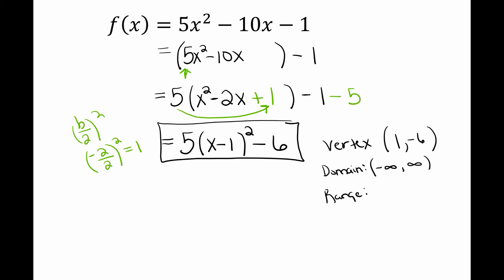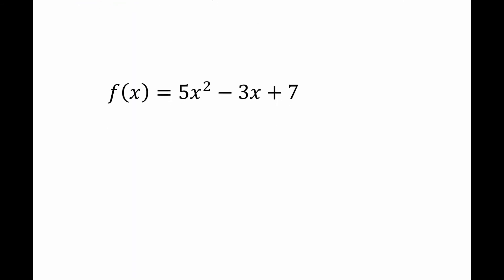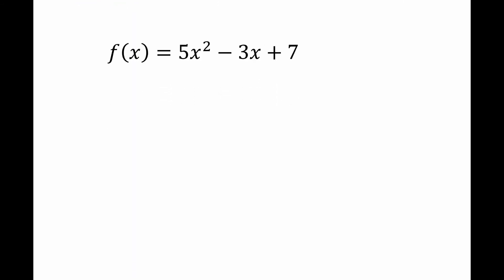My domain will be negative infinity to infinity, and my range will be negative 6 to infinity. If you can't see this by looking at the parabola, once you have it set up just draw a rough sketch. This is a parabola that goes to the right 1 and down 6. It's concave up, a little skinnier than normal because of the 5 in front. So my vertex is at 1, negative 6, domain is negative infinity to infinity, and range is negative 6 to infinity.